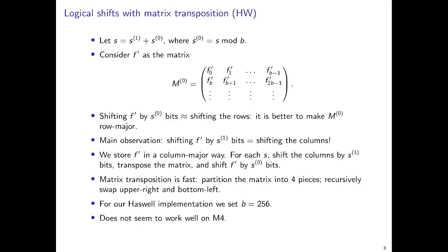So in order to be able to shift by s1 bits, we store F' in a row major way. And then for each s, we shift the columns by s1 bits, transpose the matrix, and then we shift F' by s0 bits.